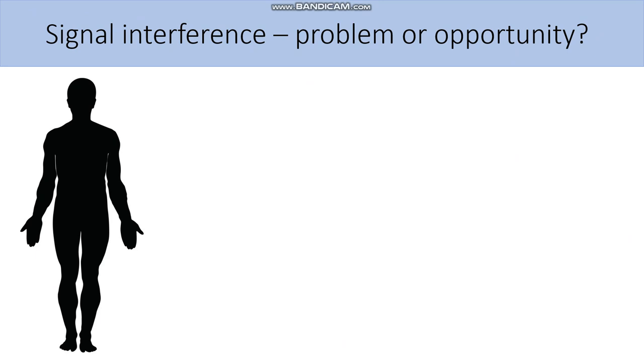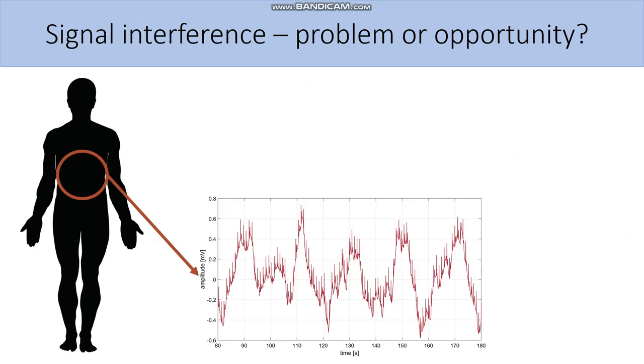Often we face the problem of signal interference between electrophysiological signals. For example, when we place the electrode on the abdominal surface for EGG measurement, we will measure clear EGG signal, but of course we will have some interference, most commonly from ECG.